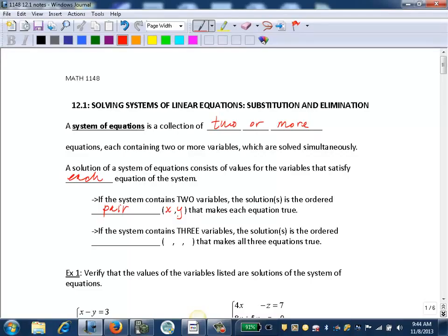Now, if the system contains three variables, which is new to our studies, the solution is actually an ordered triplet, which would be an x-y-z pair, or an a-b-c pair, or something like that.